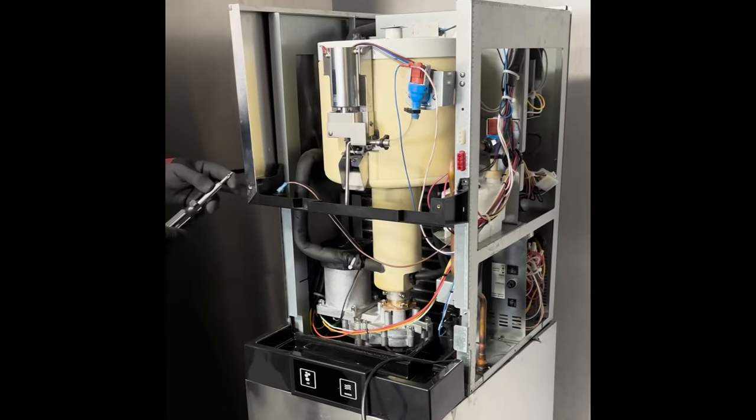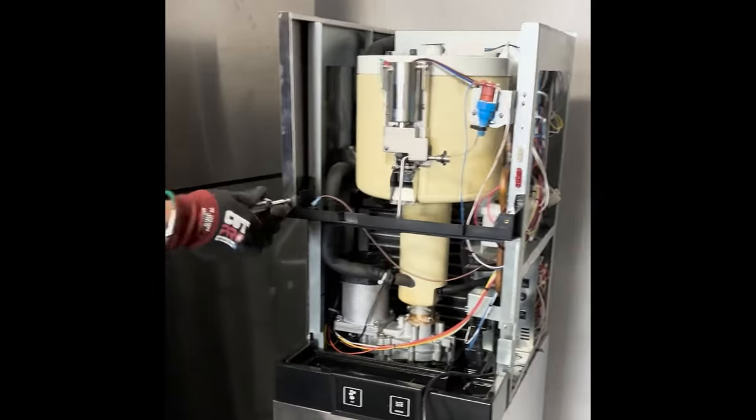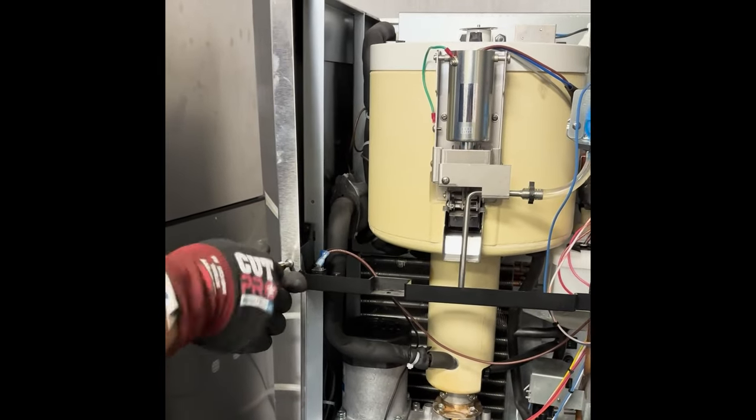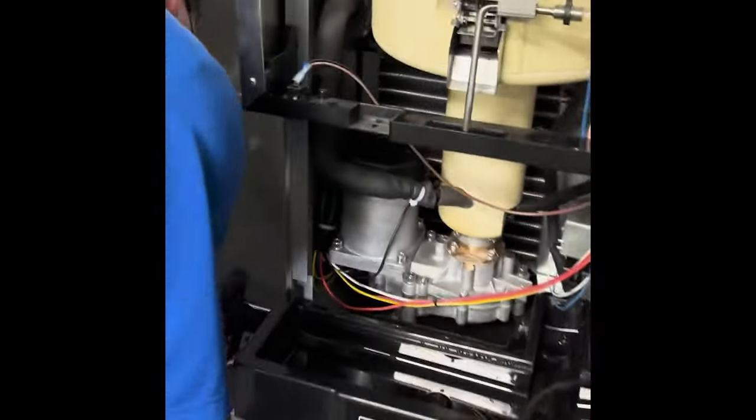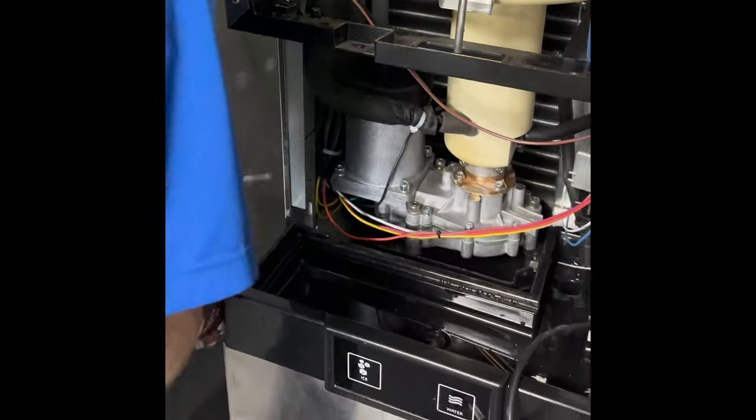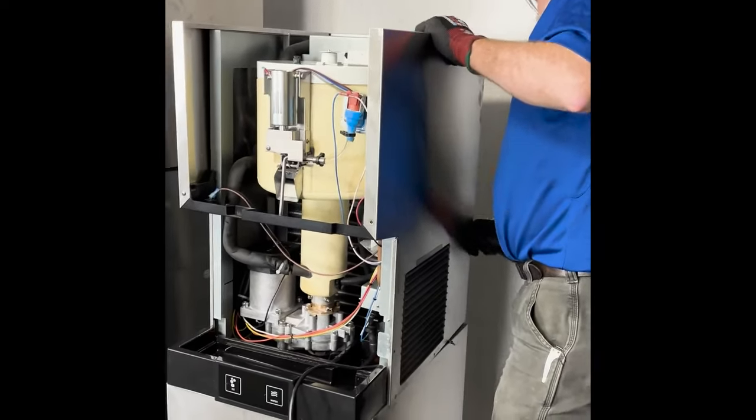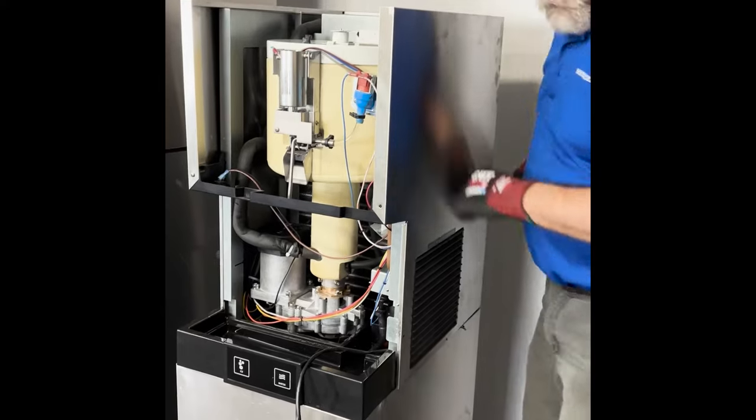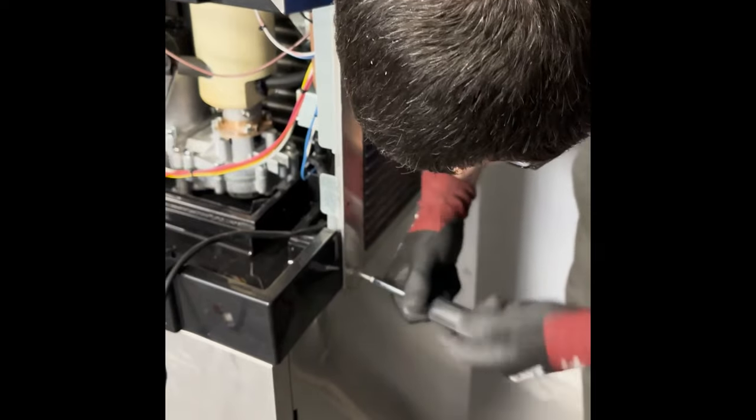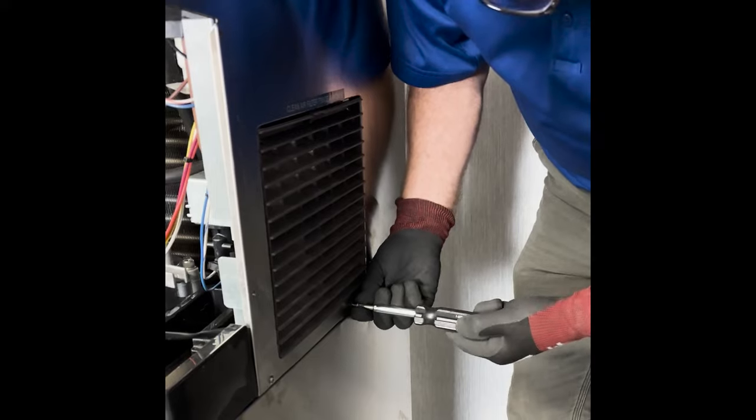Now we're going to put the exterior panels back on. Start with the left side. We've already got the screws in the rear along with the rear panel. Install one screw in the front, one screw on each side.